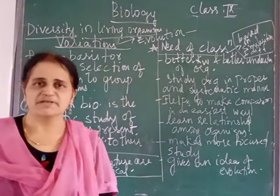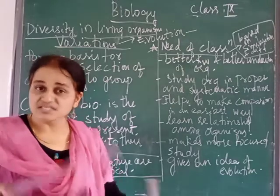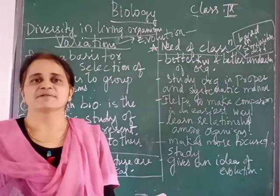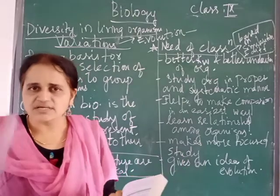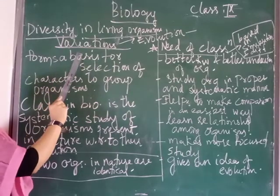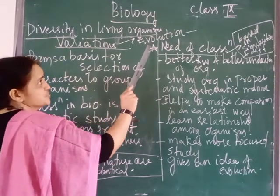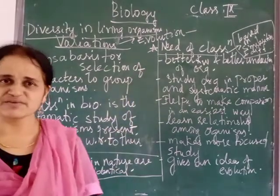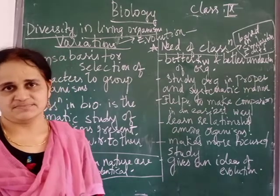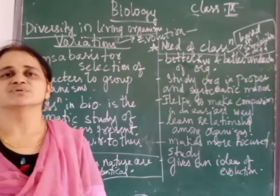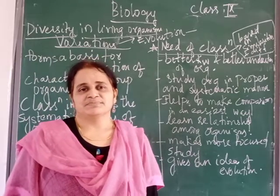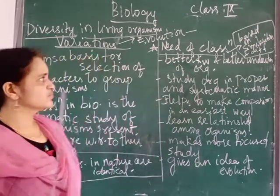Take the example of the grass family. There are some characters which are similar, like parallel venation and adventitious roots. All these belong to the grass family, so they are clubbed together in one family. This variation or differences forms the base for evolution. When I say evolution, you can think of early man — how we evolved, how many years it took. Remember Charles Darwin and Lamarck; these were the scientists who proved about evolution.